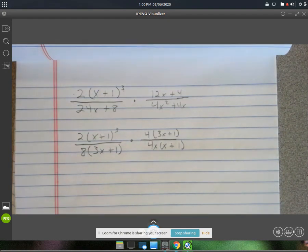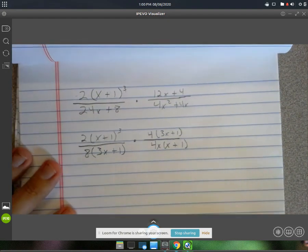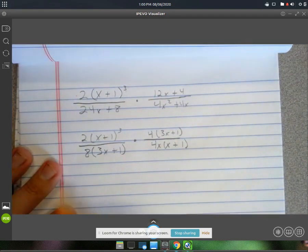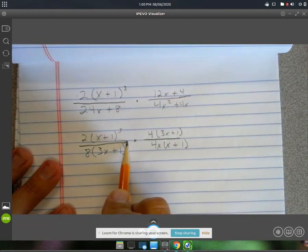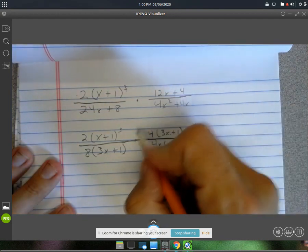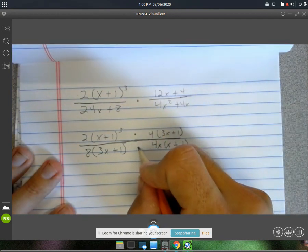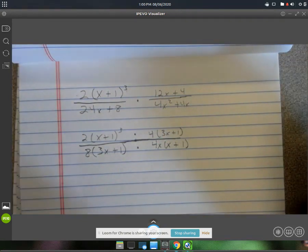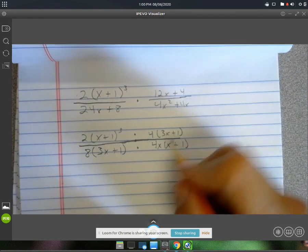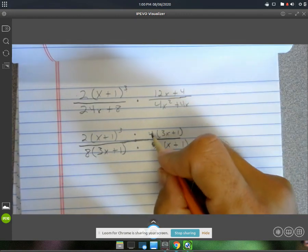Alright, so here we've got several things that will cancel. Because it's multiplication, if you want to do this, you can. You can just draw a big division bar and consider all this multiplication if you want to.